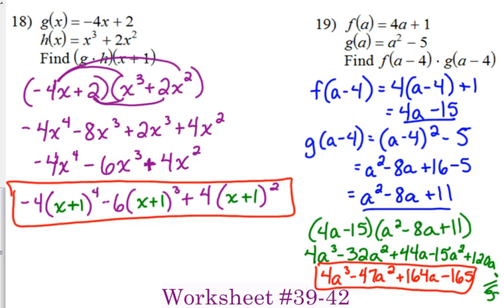You multiply the 4a plus 1 times the a squared minus 5. You multiply that out. You do the f times g and then you plug in the a minus 4 into the result. Other questions? Okay, let's give a few of these a try. 39 through 42.